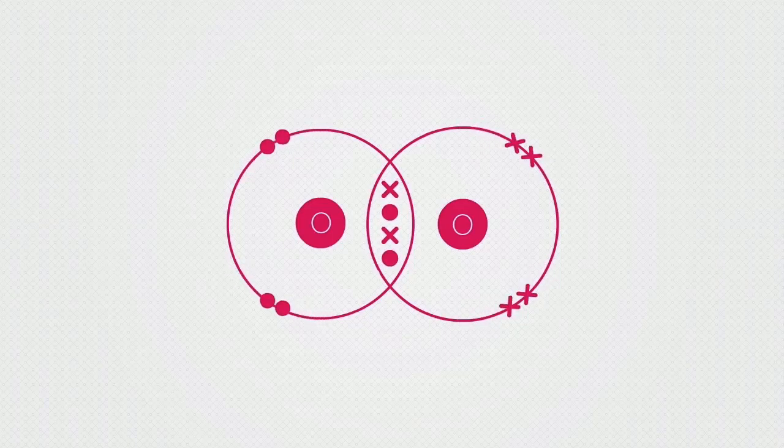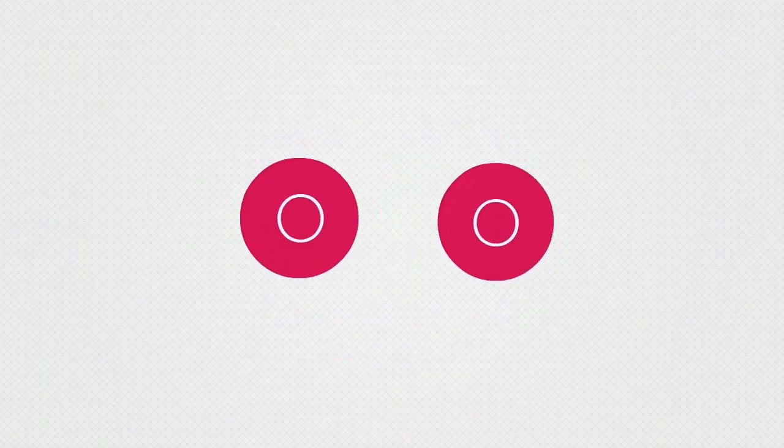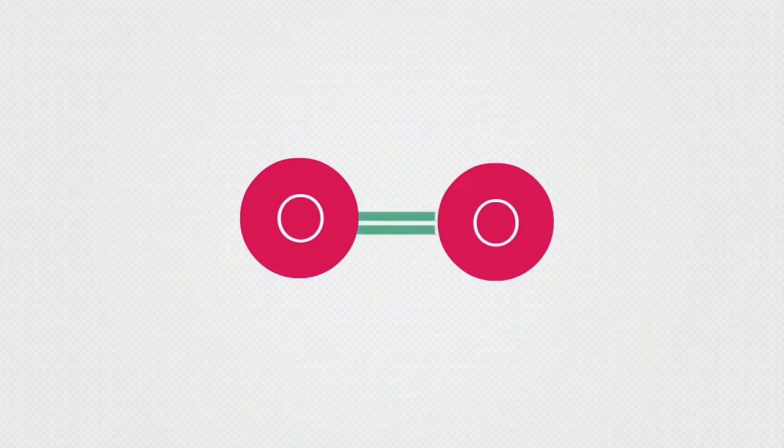The fact there are two shared pairs of electrons in the middle, where the shells overlap, means that the oxygen molecule O2 has two covalent bonds connecting each oxygen atom.